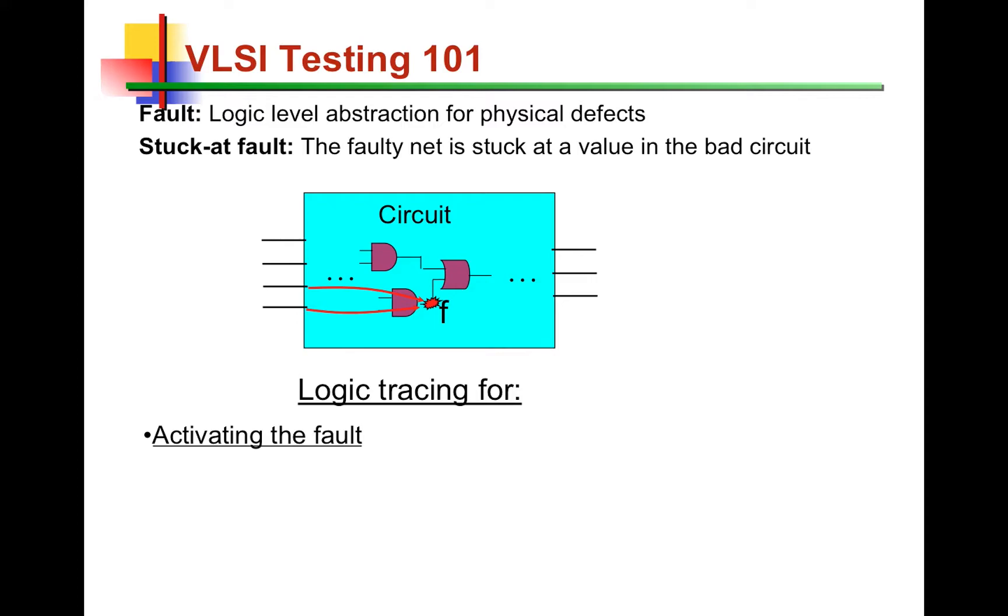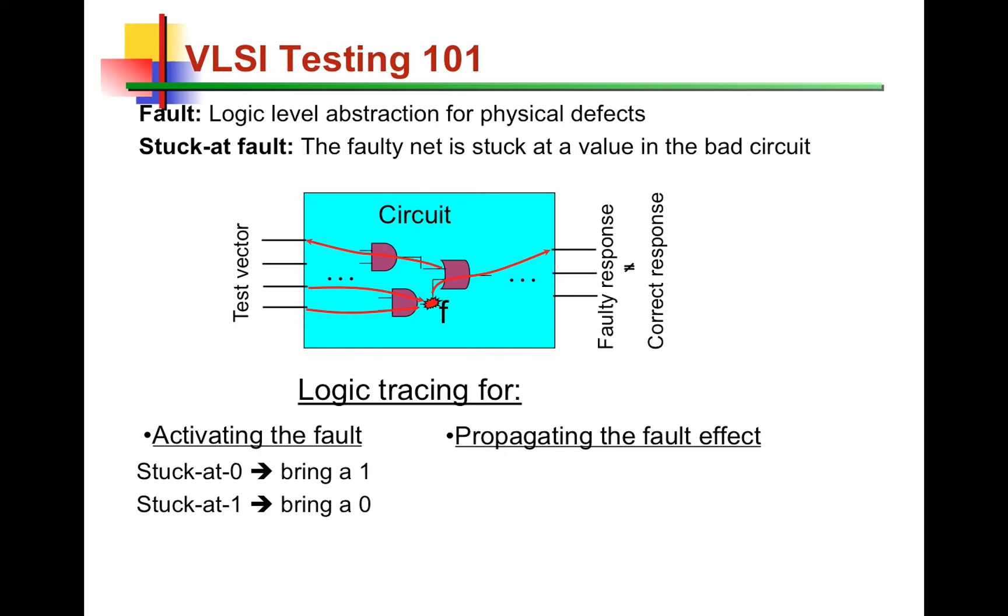So to be able to test for these faults, in testing what we do is we make certain input assignments to make sure that the fault is activated, and once it's activated, we make more assignments to make sure that the effect of this fault propagates to the outputs so that the effect is observable. Only then we can say that we have a test vector that can differentiate the response of the circuit when the fault is present from the response when it's correct. In the case of a stuck-at 0 fault, to activate it, we need to bring a 1, and vice versa, stuck-at 1 requires a 0 for activation. And to propagate the effect of the stuck-at fault, we need to assign all the side inputs of the gates from the faulty net to the outputs to the non-controlling values of the gates. For AND, the non-controlling value is 1. For OR, the non-controlling value is 0.